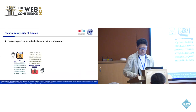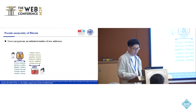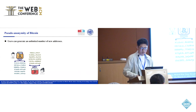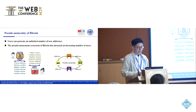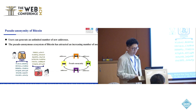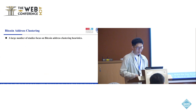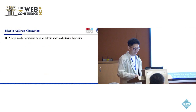In Bitcoin, users can generate an unlimited number of new addresses without revealing their real identities. The pseudo-anonymous ecosystem of Bitcoin has attracted an increasing number of users, including criminals who use Bitcoin to transfer illicit funds. To deal with illegal activities, a large number of studies have developed Bitcoin address clustering heuristics to identify addresses belonging to the same user.